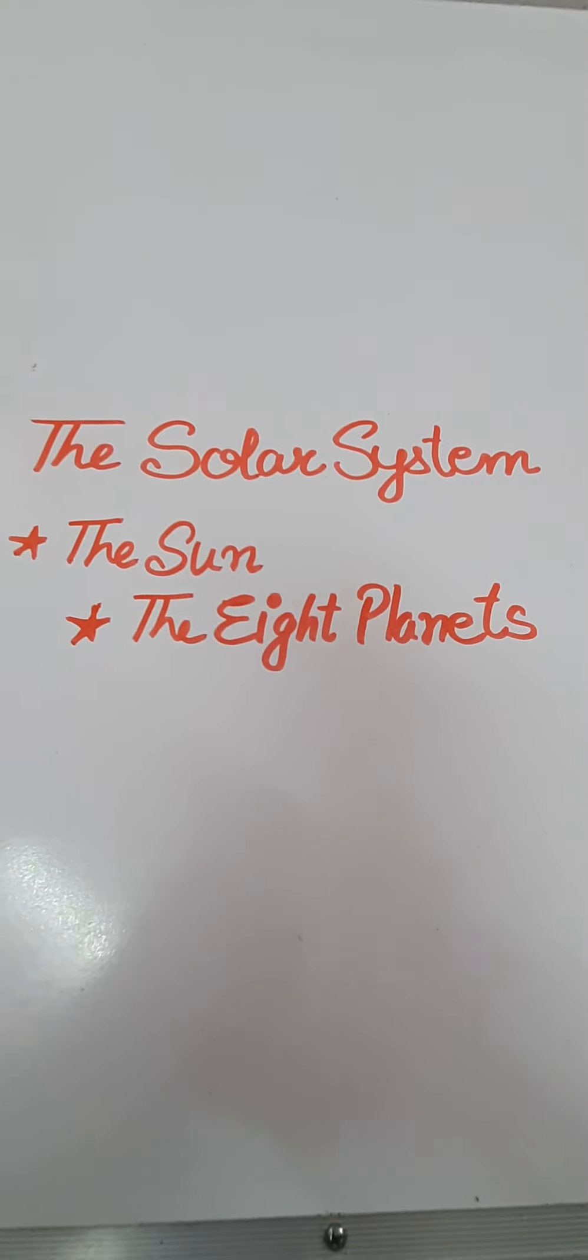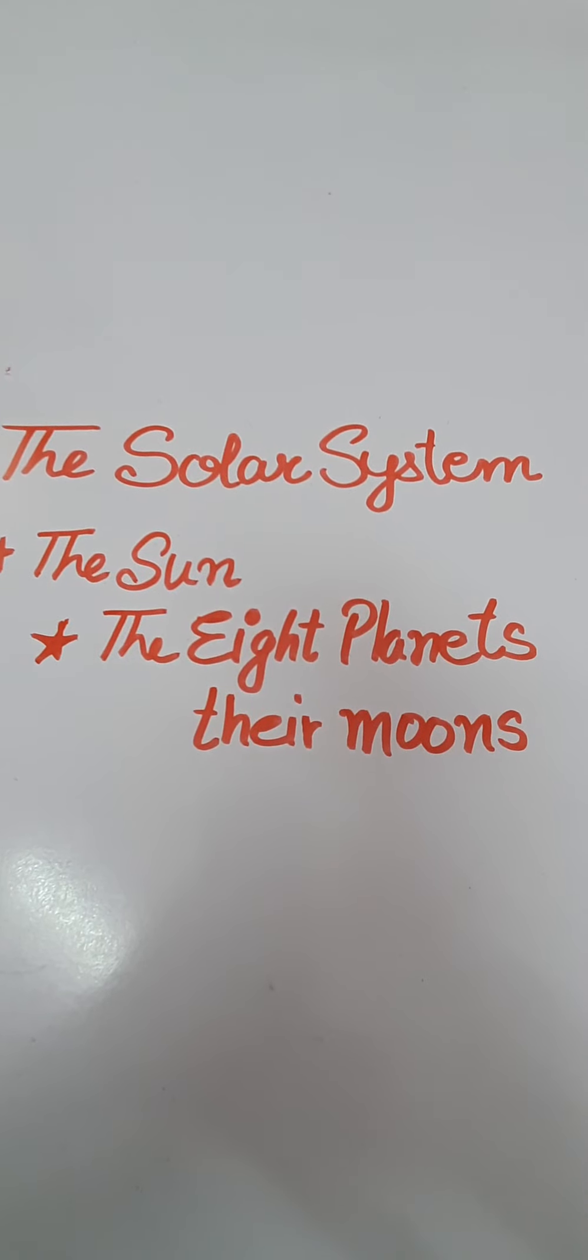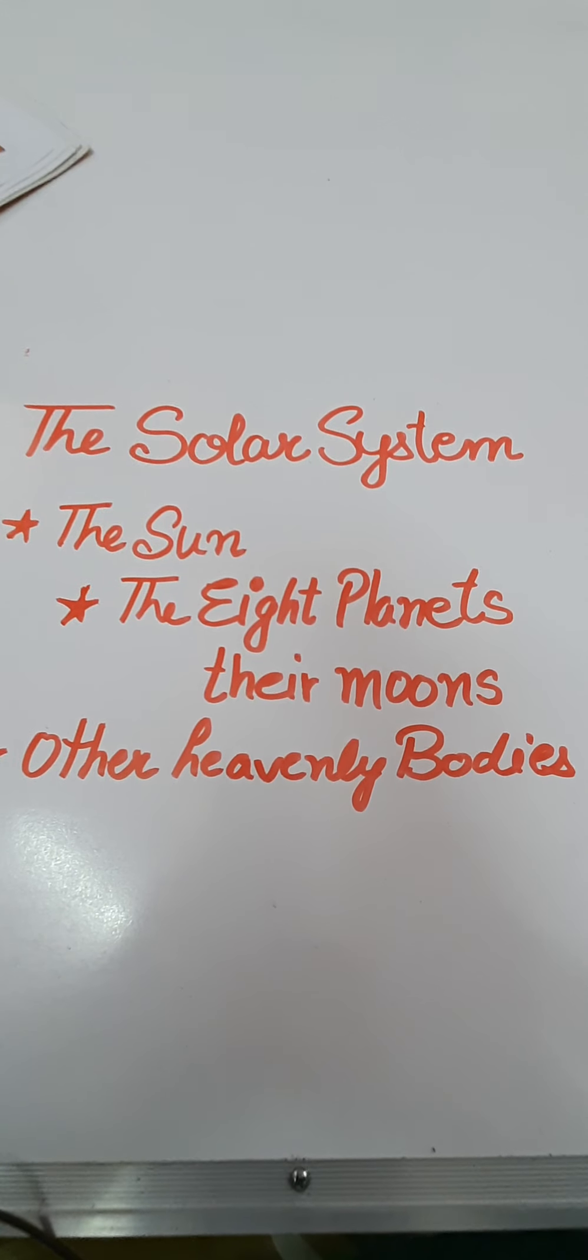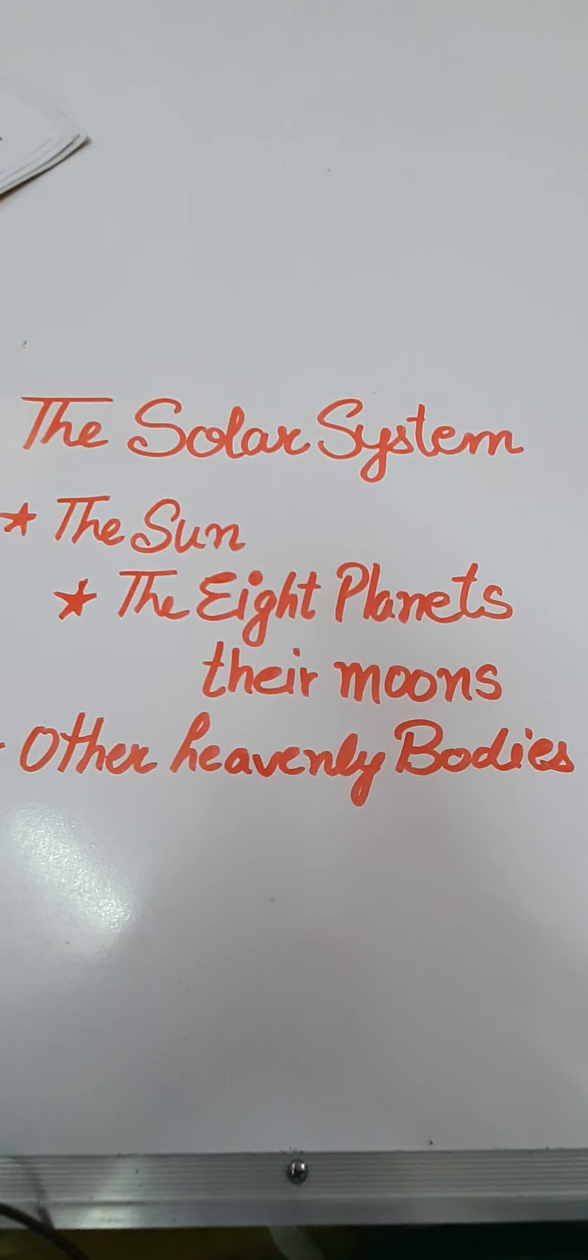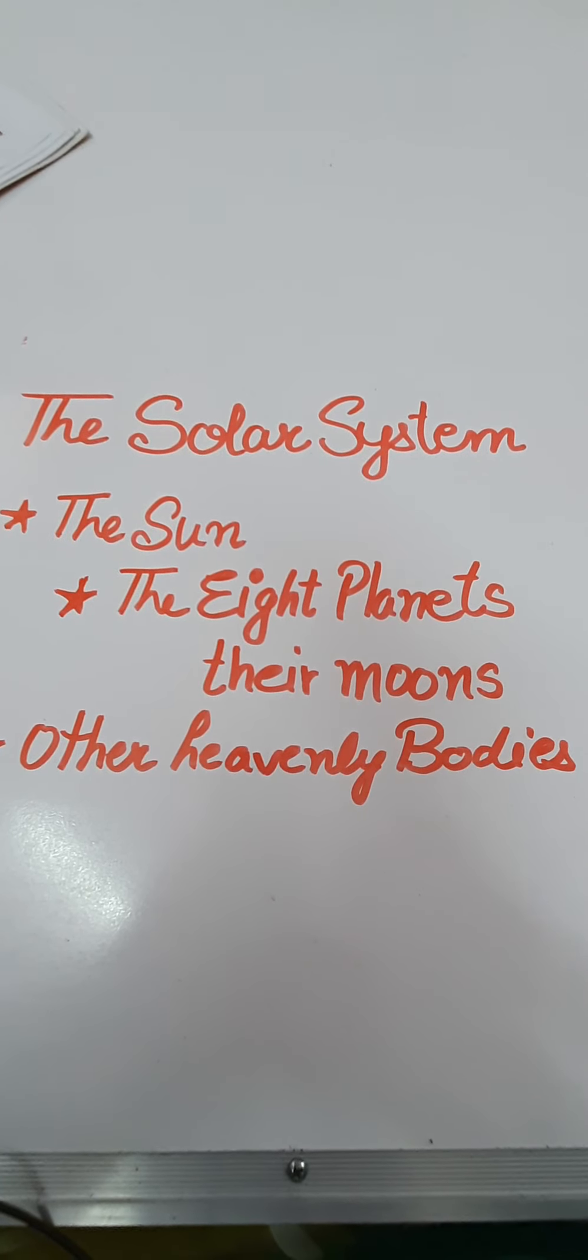Our solar system consists of the sun, the eight planets, their moons, and other heavenly bodies like meteoroids, satellites, etc.